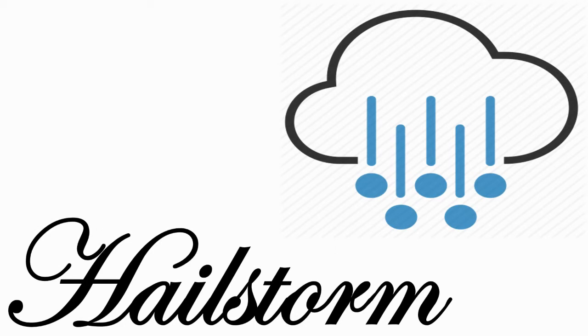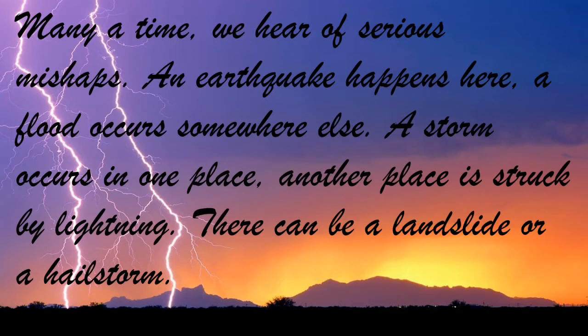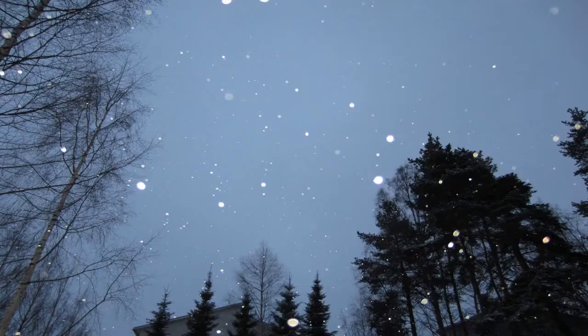This concept you have already studied in English subject. Now we will also study in EBS 1. Let us check what is the meaning of hailstones. Many a time we hear of serious mishaps — this means an unfortunate accident. An earthquake happens here, a flood occurs somewhere else. A storm — storm means thunder — occurs in one place, and another place is struck by lightning. There can be a landslide or a hailstorm. Let us study in detail: what is the meaning of hailstorm?